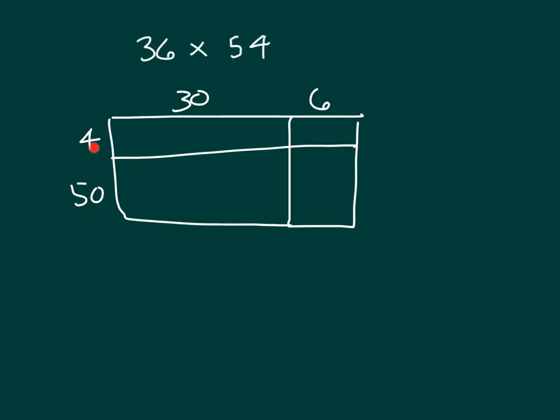Let's start by taking a look at this here. That's 4 times 3 tenths, which equals 12 tenths. Next we have 4 times 6 ones, which equals 24 ones. Here we're looking at 5 tenths times 3 tenths, which equals 15 hundredths.